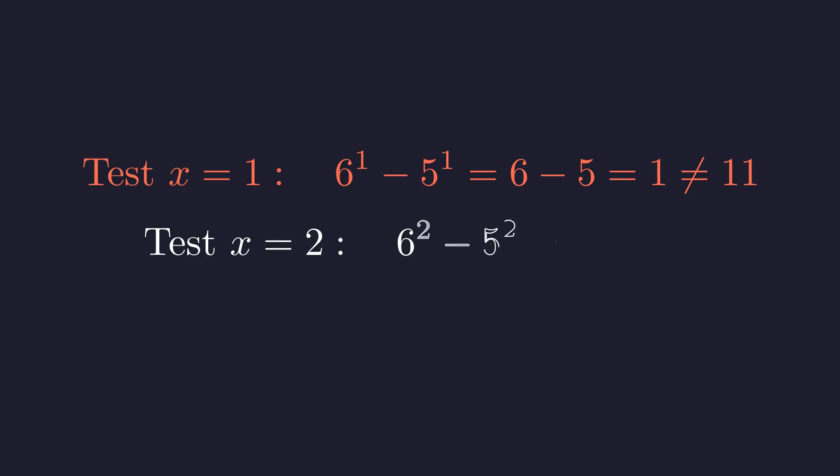What about x equals 2? Well, 6 squared is 36 and 5 squared is 25, so we're looking at 36 minus 25, and that gives us 11. Perfect, so x equals 2 is indeed a solution to our equation.